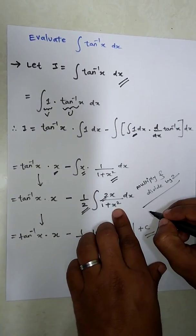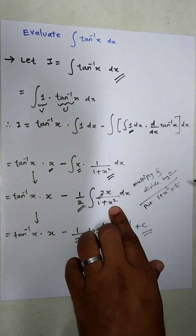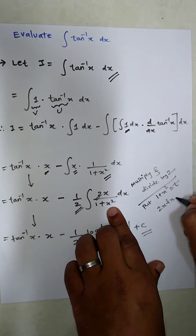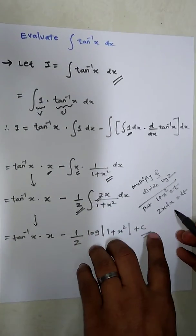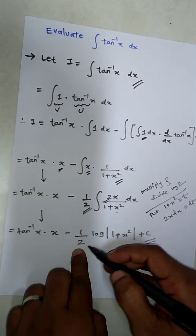Put 1 plus x square equal to t and then differentiate, 2x dx equal to dt. So we can easily write this thing as dt and this thing as t. Half will remain as it is.